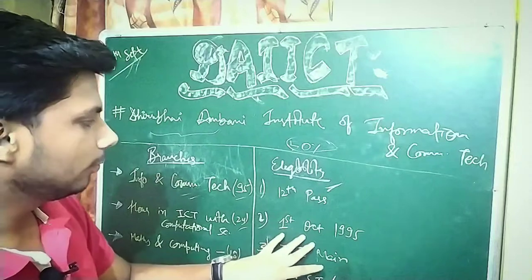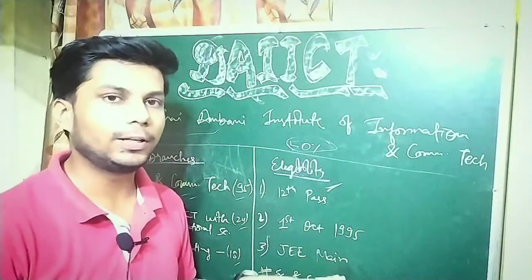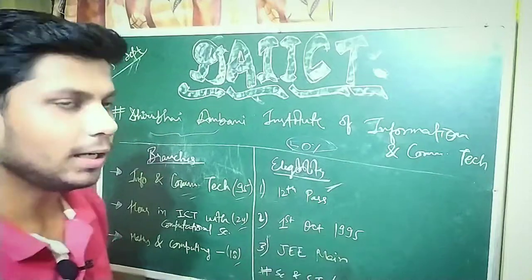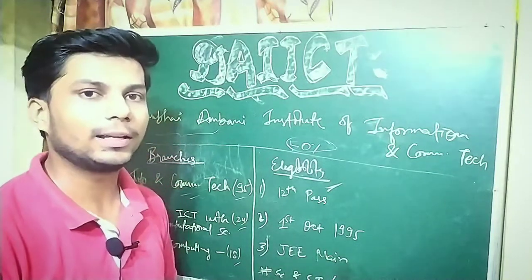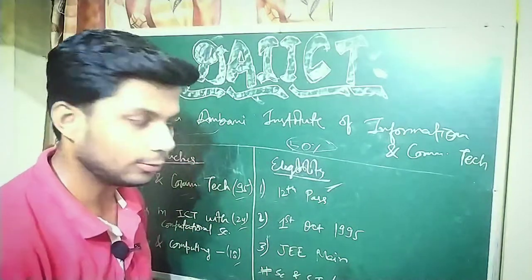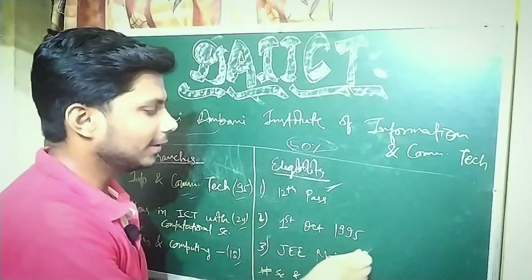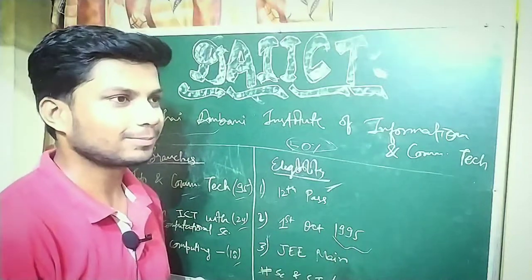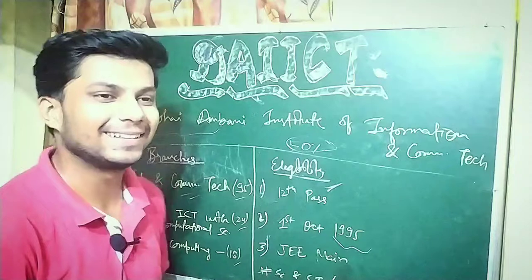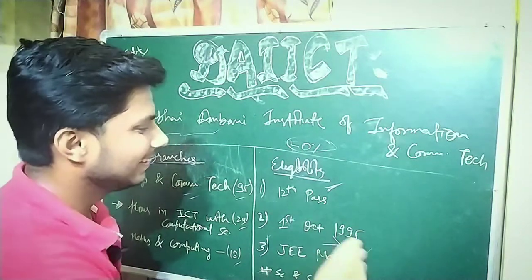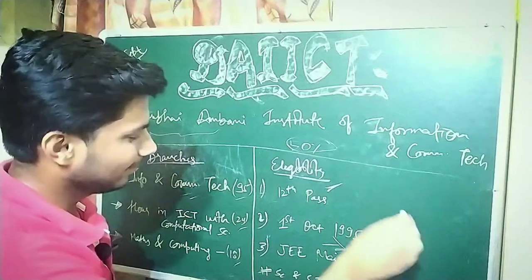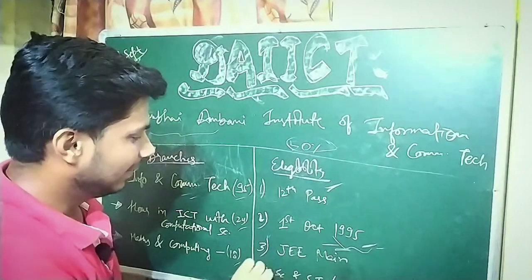The date of birth deadline is 1st October 1995. So people born after 1995 can apply, which gives a lot of relief. Droppers can also apply. You can understand that up to 25 years of age, you can apply in the first year.